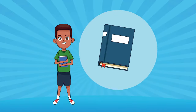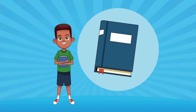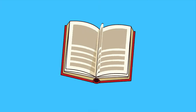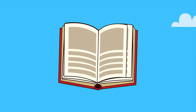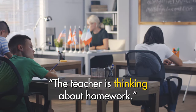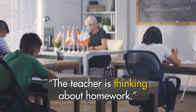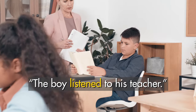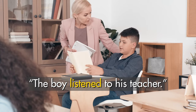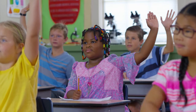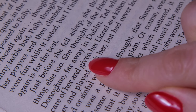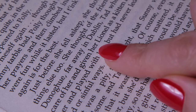Verbs don't just describe physical actions — they can also show mental actions. Like in this sentence: The teacher is thinking about homework. And in this sentence: The boy listened to his teacher. There are many different verbs in the English language because there are many different actions.